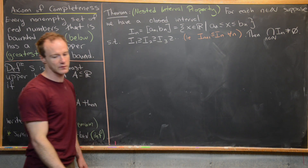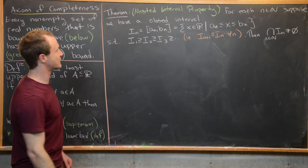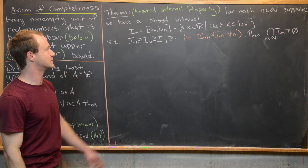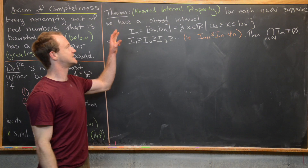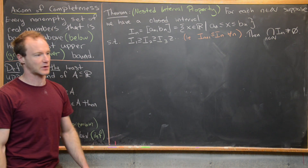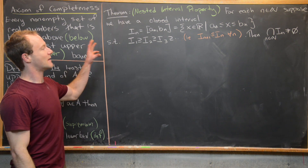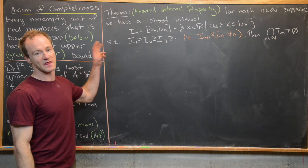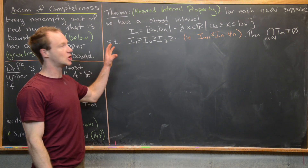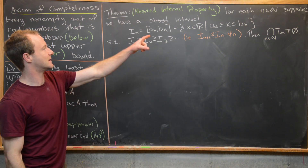The first result we want to prove, which follows from this axiom of completeness, is the so-called nested interval property. This has to do with nested closed intervals.